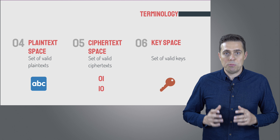There are a few properties that we want our encryption function to offer in order for it to be practical in the real world. First, the encryption, decryption, and key generation functions need to be efficient to compute — it's not going to be useful if encrypting an email takes a hundred years. Second, we need unique decryption: the encryption and decryption functions need to be inverses of one another. You should always get back the message you put in if you give it the right key.